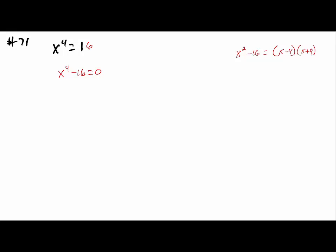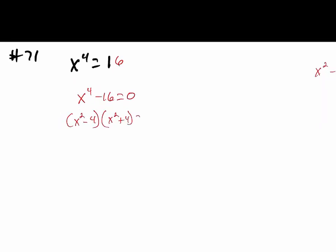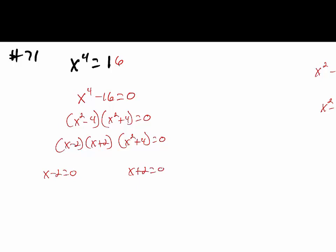So this becomes x squared minus 4 times x squared plus 4 equals zero. And I know that x squared minus 4 factors further into x minus 2 times x plus 2. So I'll use that to factor x squared minus 4.